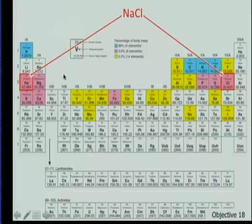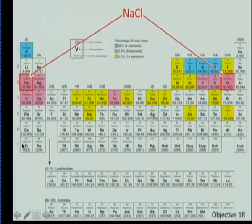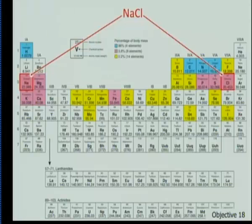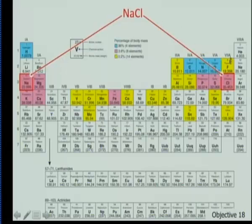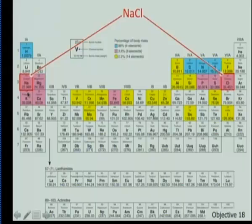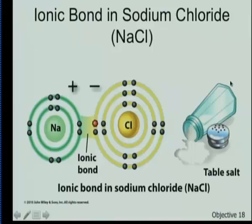We form ionic bonds between elements on the left side of the periodic table — the metals — and elements on the right side — the non-metals. Elements on the left want to give away electrons and therefore become positive. Elements on the right want to receive electrons and therefore become negative. Sodium is in group one, meaning it has one electron in its outer shell. It gives that away to have eight, just like neon. Chlorine has seven and wants one more to be like argon. It gets that electron from sodium. Sodium becomes a +1 cation; chlorine becomes a -1 anion. A plus loves to be by a minus, so they attract each other — that's an ionic bond.